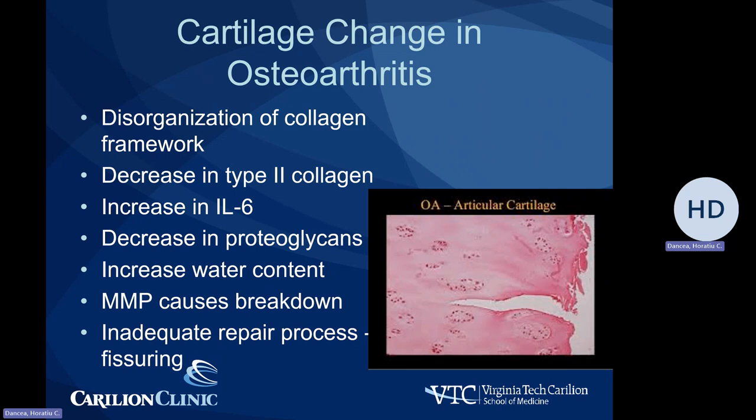In osteoarthritis, the changes start with disorganization of the collagen framework as well as decrease in type 2 collagen, with concomitant increase in IL-6 (interleukin-6), which is a pro-inflammatory cytokine produced by our body. There is a decrease in proteoglycans as well as an increase in water content. MMPs, which are metalloproteinases, are enzymes that cause breakdown within this matrix. And due to an inadequate repair process, this results in fissuring of the cartilage, as noted in the picture on the right.